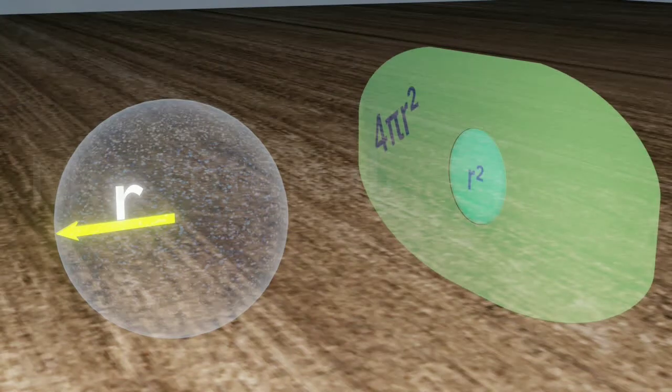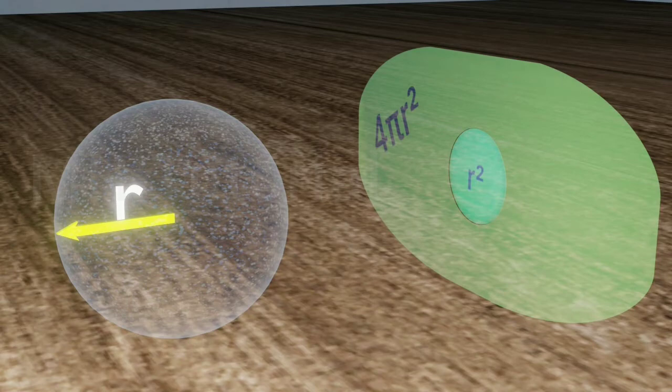Now, take a portion of the surface area of size R². It may be of any shape, but its area should be R².